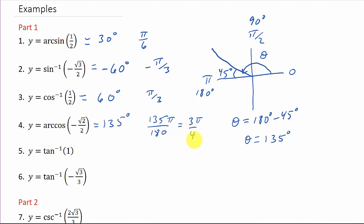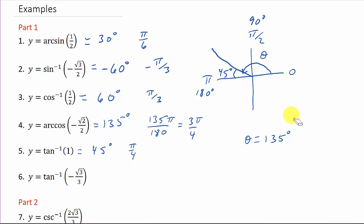Now let's look at inverse tangent. The inverse tangent of 1 — the tangent of what is 1? That's 45 degrees, or in radians π/4.